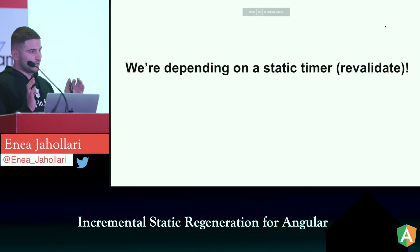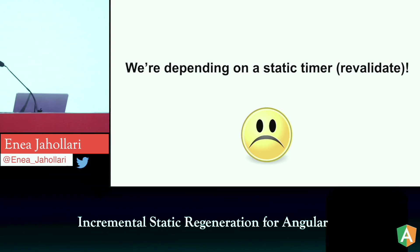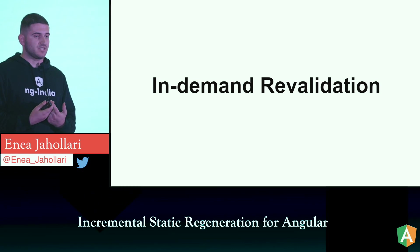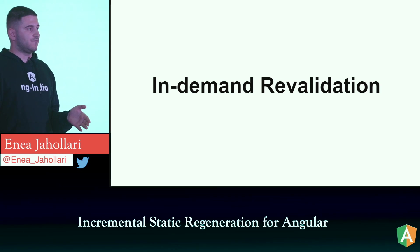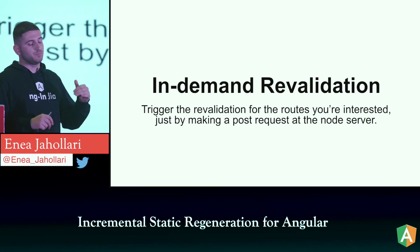We're still depending on a static timer. That's why we've offered on-demand revalidation: if we know when data changes, we can make an API call to the Node server and say 'please regenerate these specific URLs like product pages.' With this we trigger regeneration whenever we want, without waiting for the revalidation timer.